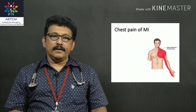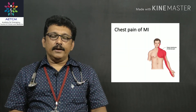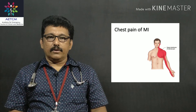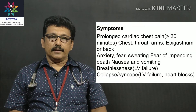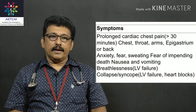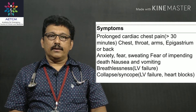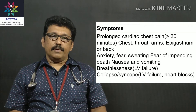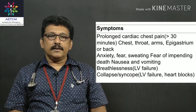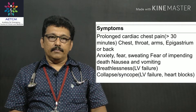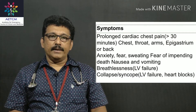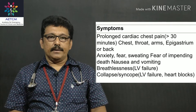The pain starts in the central chest with a tightening sensation and may radiate to the medial side of the left arm. It is a continuous pain lasting more than 30 minutes, and can radiate to the chest, throat, left arm, epigastrium, and even the back. The patient can have severe anxiety, sweating, a feeling of impending death, nausea, and vomiting associated with the chest pain.